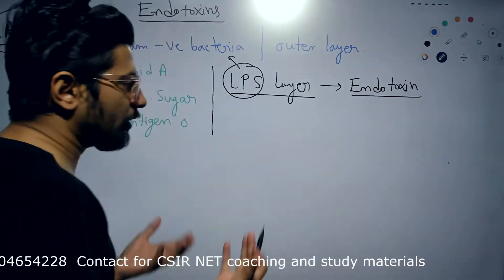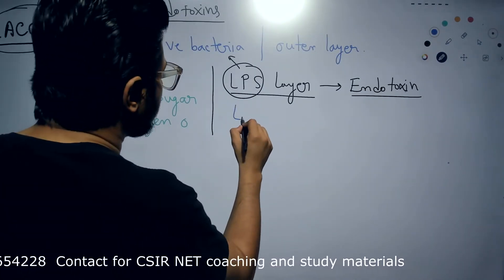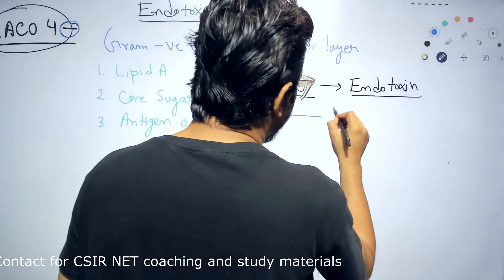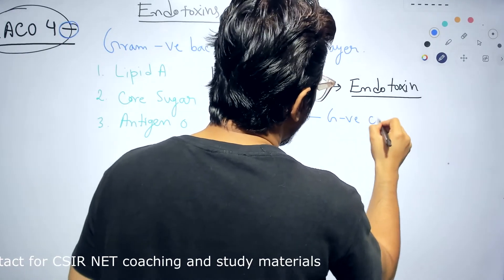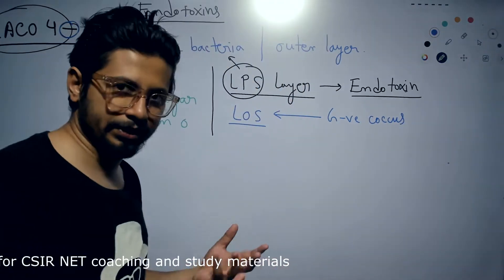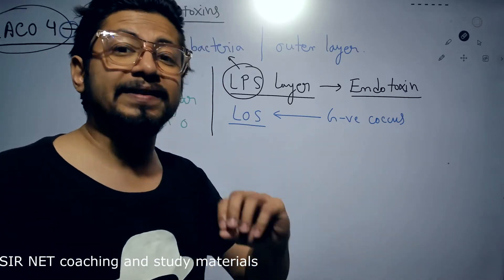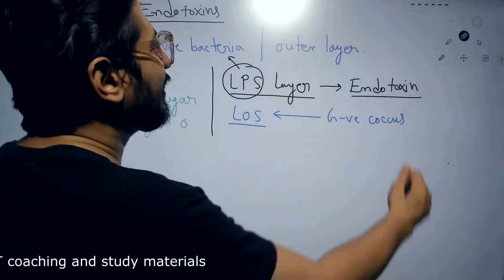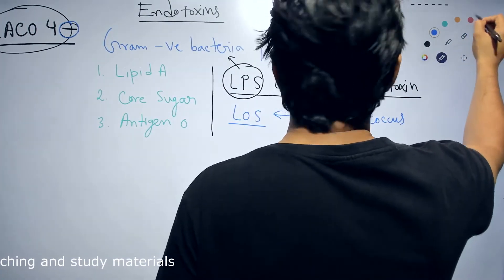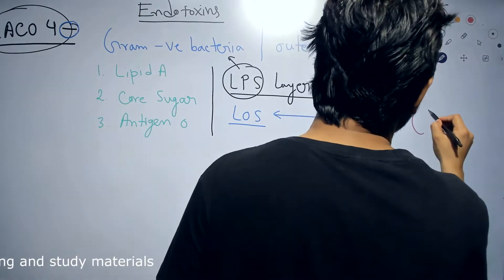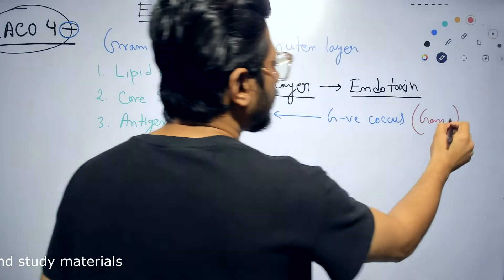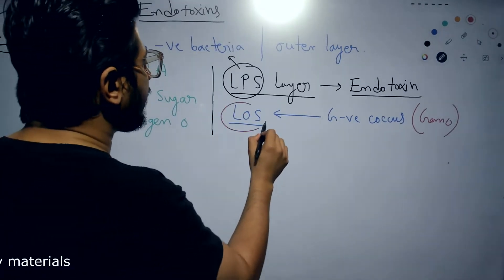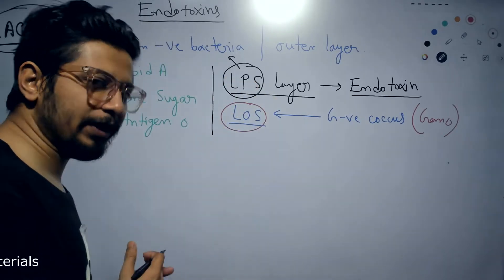Apart from LPS, another example of endotoxin is lipooligosaccharide (LOS), which is specifically released by gram-negative cocci. Generally, cocci are gram-positive — like Streptococcus and Staphylococcus — but there are a few gram-negative cocci, and they are extremely dangerous. An example of such a gram-negative coccus is gonococcus, which causes Neisseria gonorrhoeae infection.